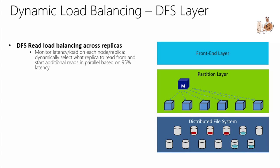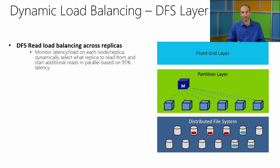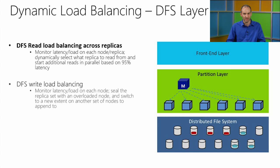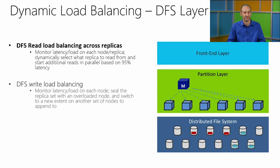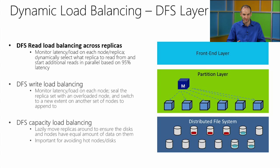The distributed file system also load-balances across its nodes by monitoring load across all replicas. For reads, it analyzes how long each read is expected to take, and if one replica is taking longer than expected it reads from another replica instead. Write load balancing works similarly — it finds the three least-busy locations to write data. The system constantly dynamically load-balances across all disks to maintain consistent performance, and also ensures all disks are evenly filled.